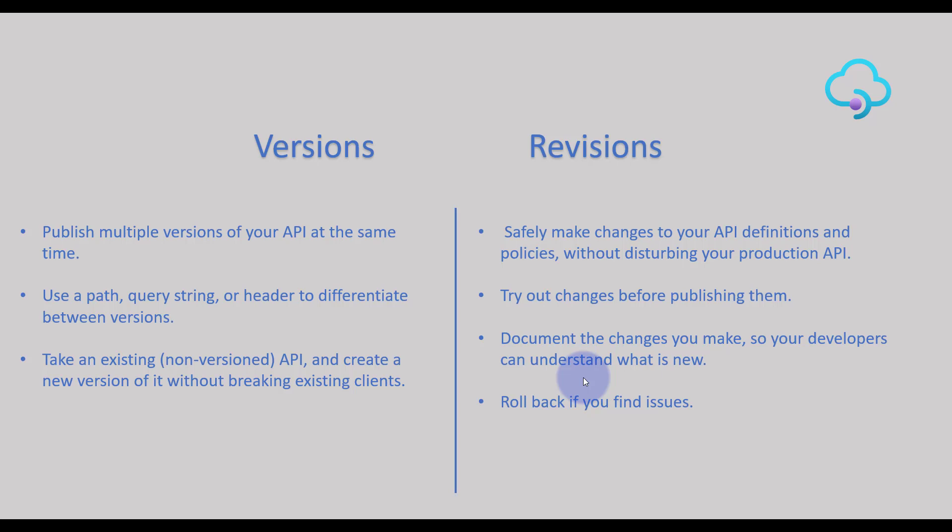The version can be defined in API management with three different types. It can be configured with path-based versioning, or it can be configured with query string, or the request header type. We'll check all the options available in the Azure portal.